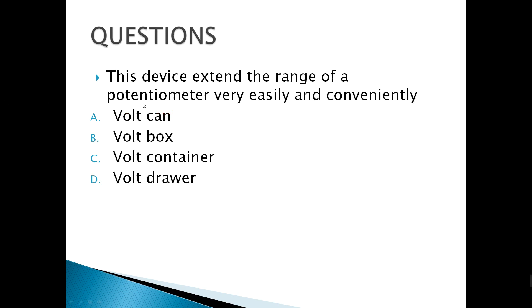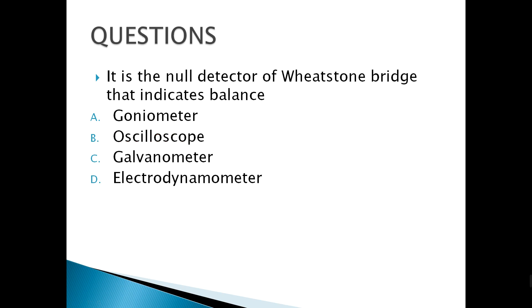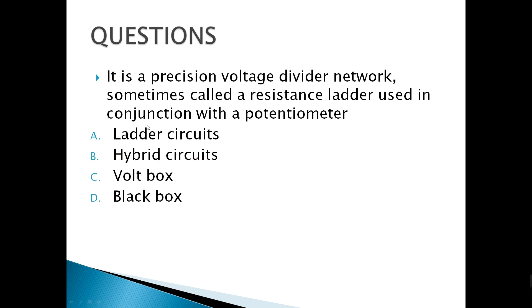A device that extends the range of a potentiometer very easily and conveniently — we call this the volt box. The null detector of a Wheatstone bridge that indicates balance is the galvanometer. A precision voltage divider network, sometimes called a resistance ladder, used in conjunction with a potentiometer — we also call this the volt box.